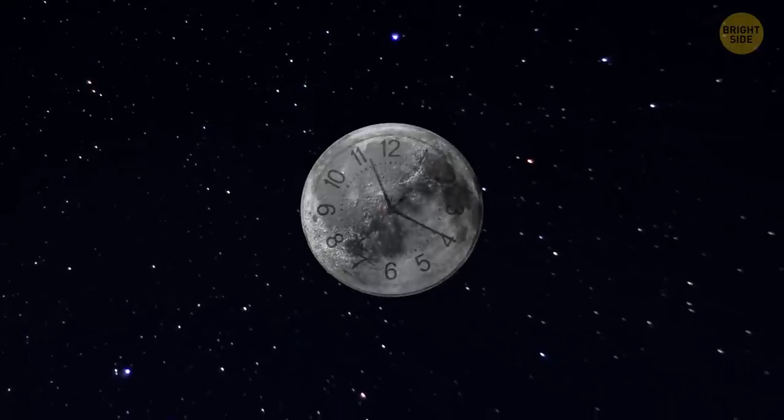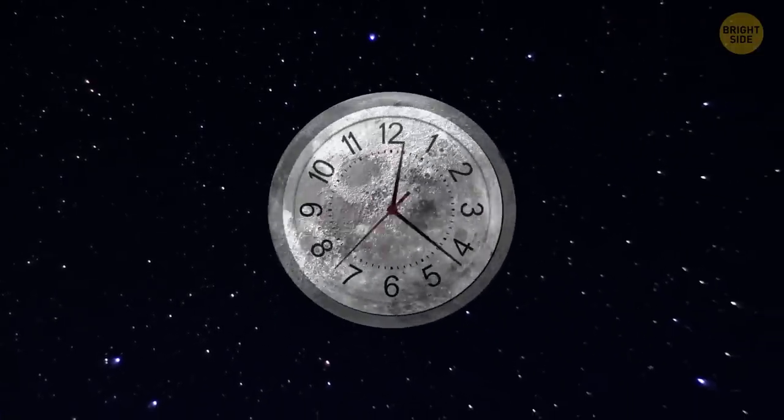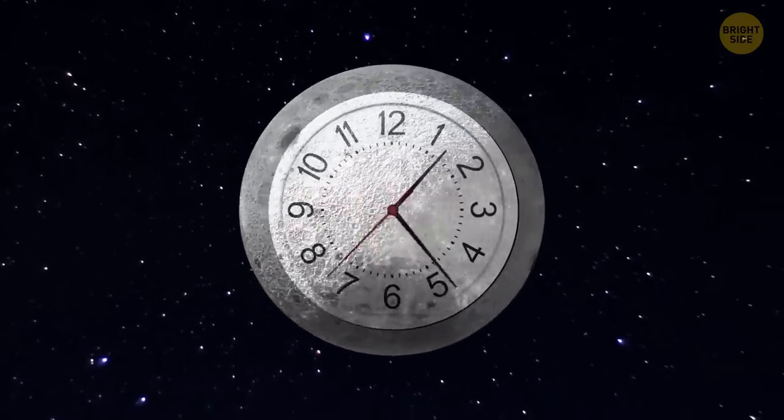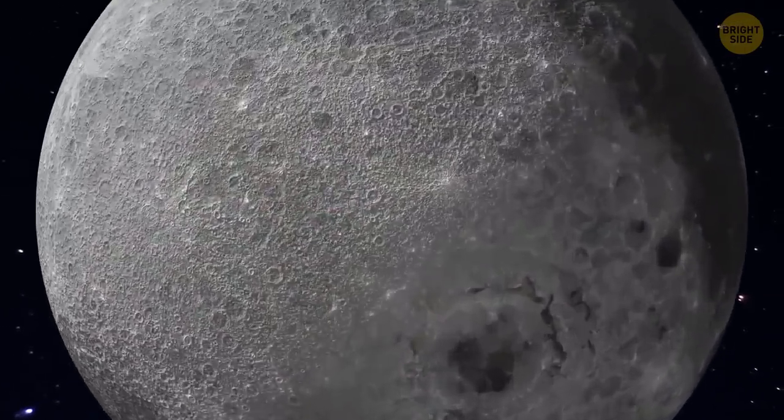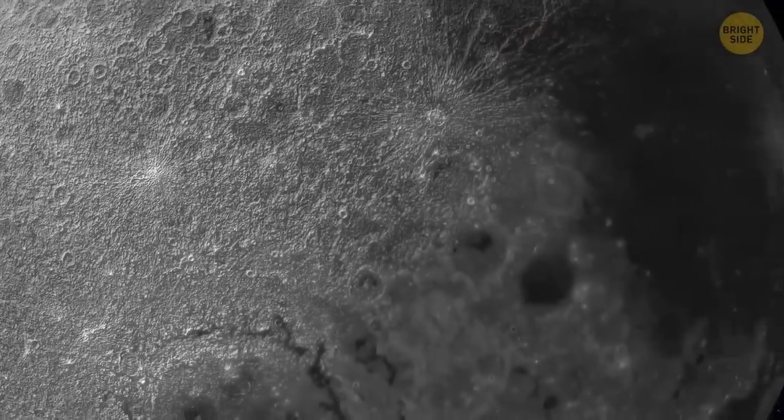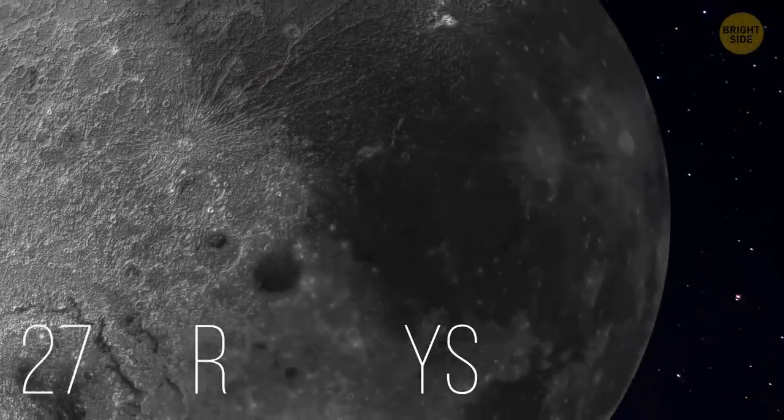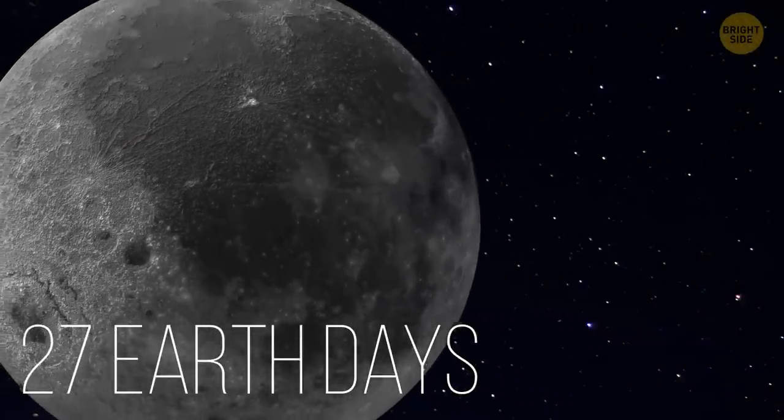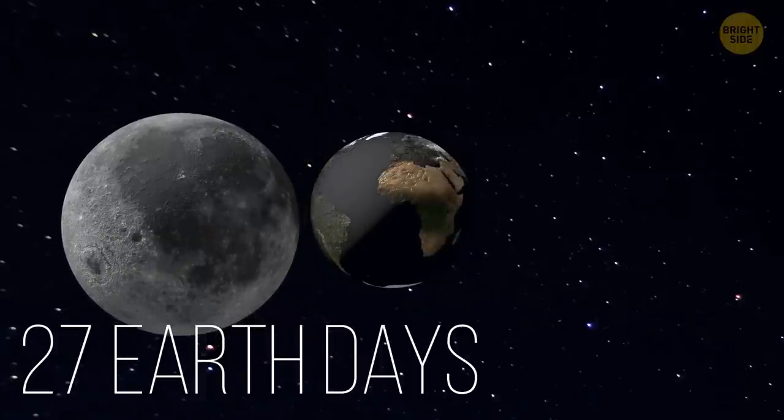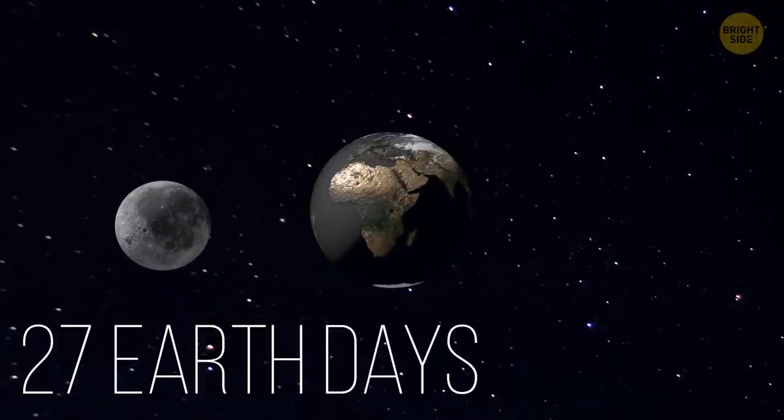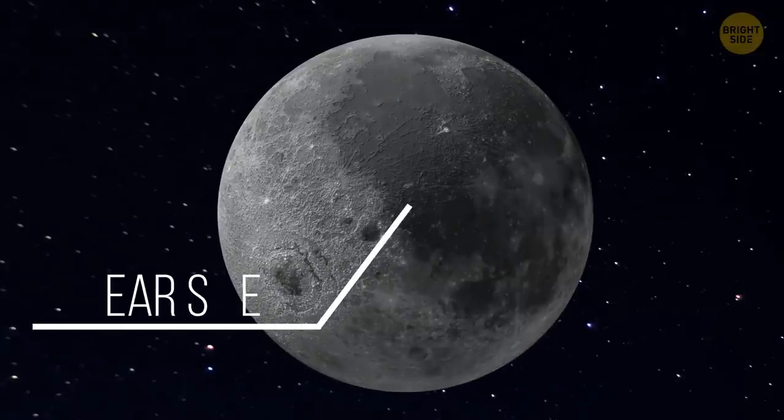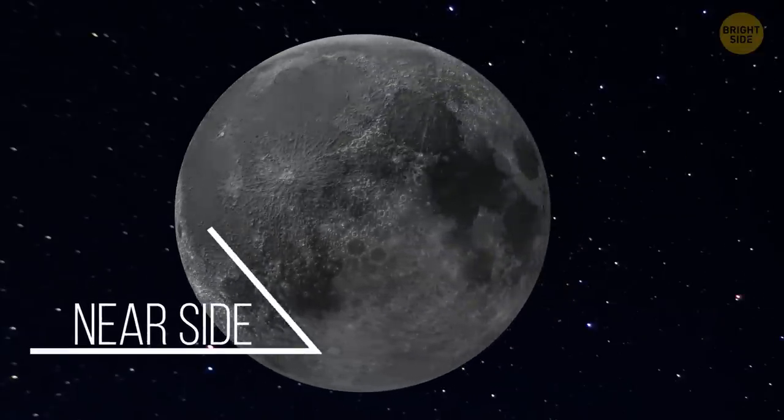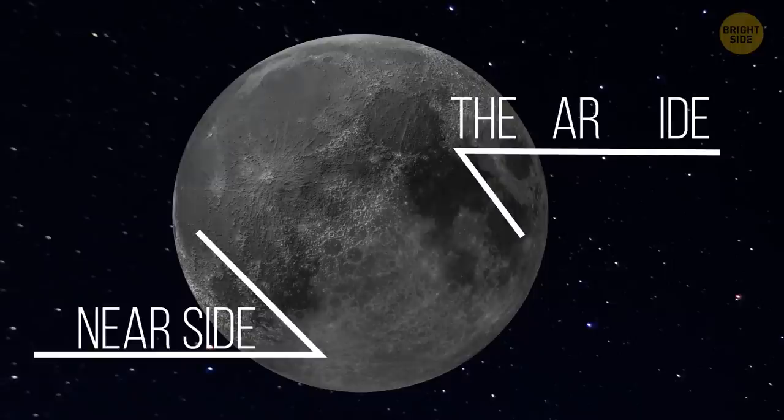If you observe the Moon for some time, you may notice that it's the same face staring at you every night. The truth is that the Moon does rotate, but very slowly. It takes our planet's natural satellite 27 Earth days to rotate around its axis. Plus, the Moon rotates at the same rate that it orbits Earth. The side we always see is called the near side of the Moon. And the side that's not facing us is, you guessed it, the far side of the Moon. It also has the nickname the dark side of the Moon.